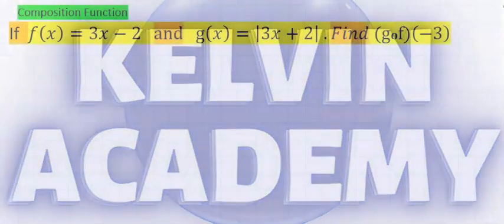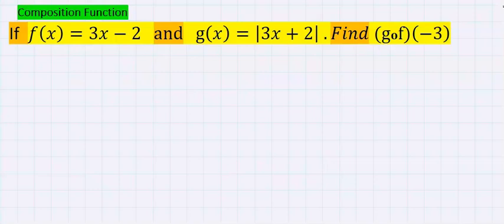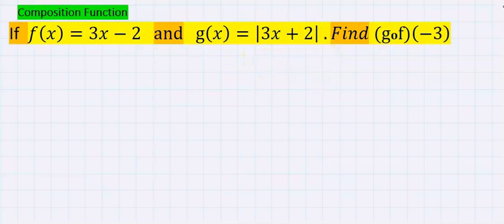If f is equal to 3x minus 2 and g is equal to 3x plus 2, enclosed in absolute value function, find the composition function g of f at x equal to minus 3.